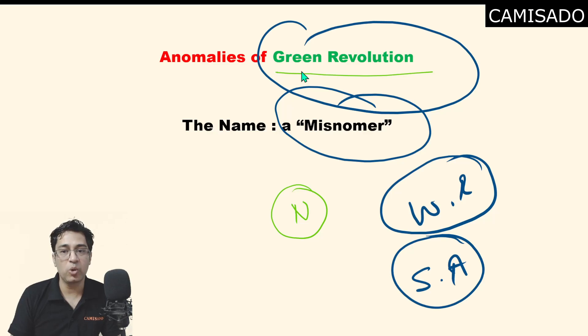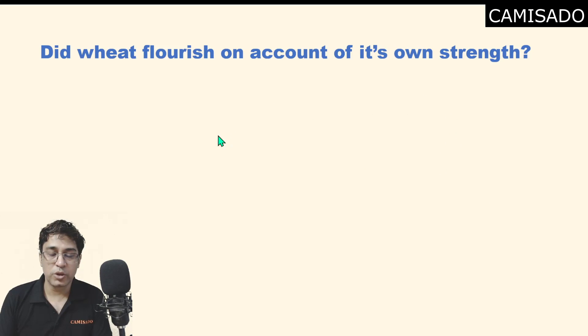It was only about the quantum jump in the growth of wheat primarily. Primarily only wheat was in focus. That is why it seems that the term green revolution is a misnomer.